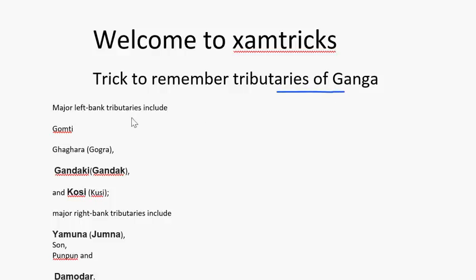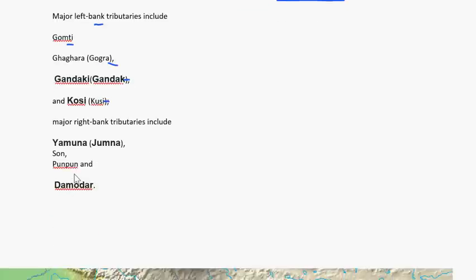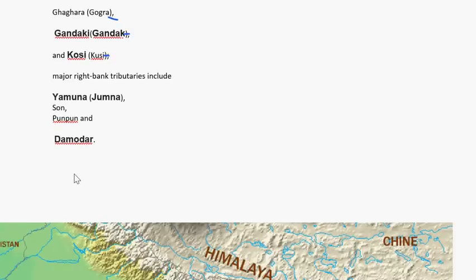There are left bank tributaries and right bank tributaries. Major left bank tributaries are Gomti, Ghagra, Gandak, and Kosi. Major right bank tributaries include Yamuna, Son, Punpun, and Damodar.